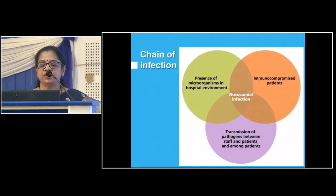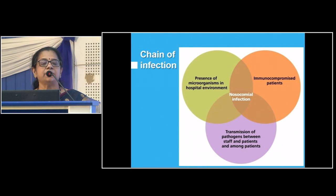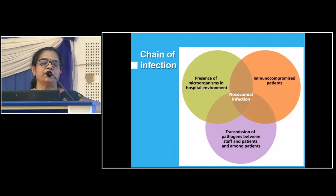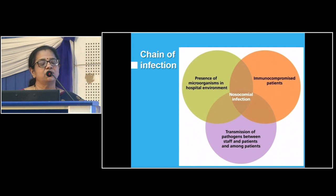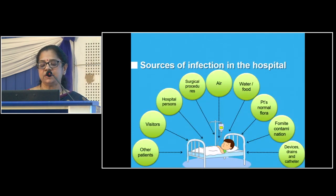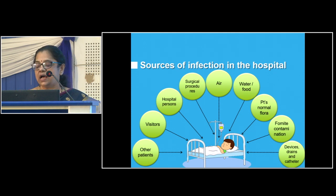This is the chain of infection. There is a presence of microorganism in the hospital environment; immunocompromised patients; and transmission of pathogens between staff, patients, and among patients themselves. There should be proper distance between beds because one patient might get co-infection from co-patients. Sources of infection in the hospital include air, water, food and fomites, hospital persons, visitors, and other patients. Cleanliness of the hospital is very important — even tuberculosis can spread subtly. Food handlers can spread Salmonella, Vibrio cholerae, Shigella, or staphylococcal infections.